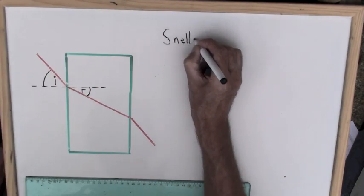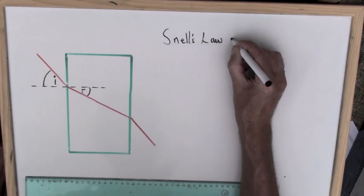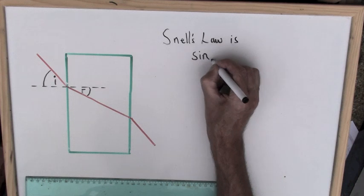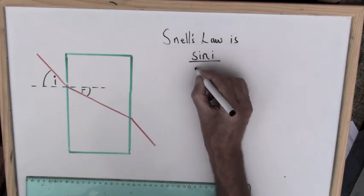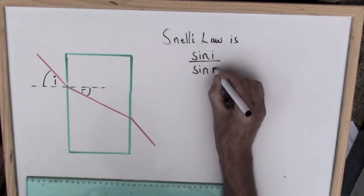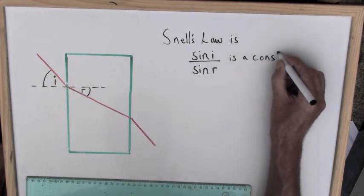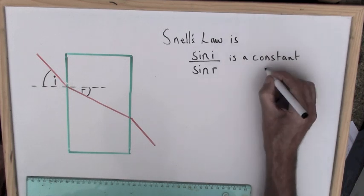The change of angle as the light enters the block is due to its slowing down. To calculate this change of angle, we use Snell's law. That states that the sine of the angle of incidence divided by the sine of the angle of refraction is equal to a constant for that pair of materials, in this case air and glass.